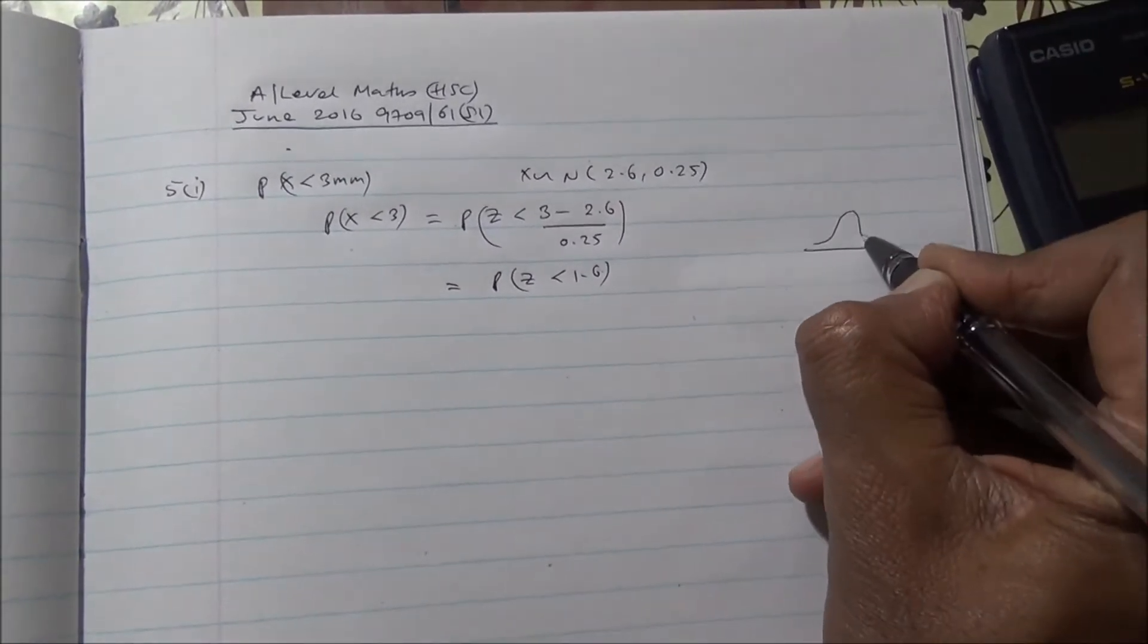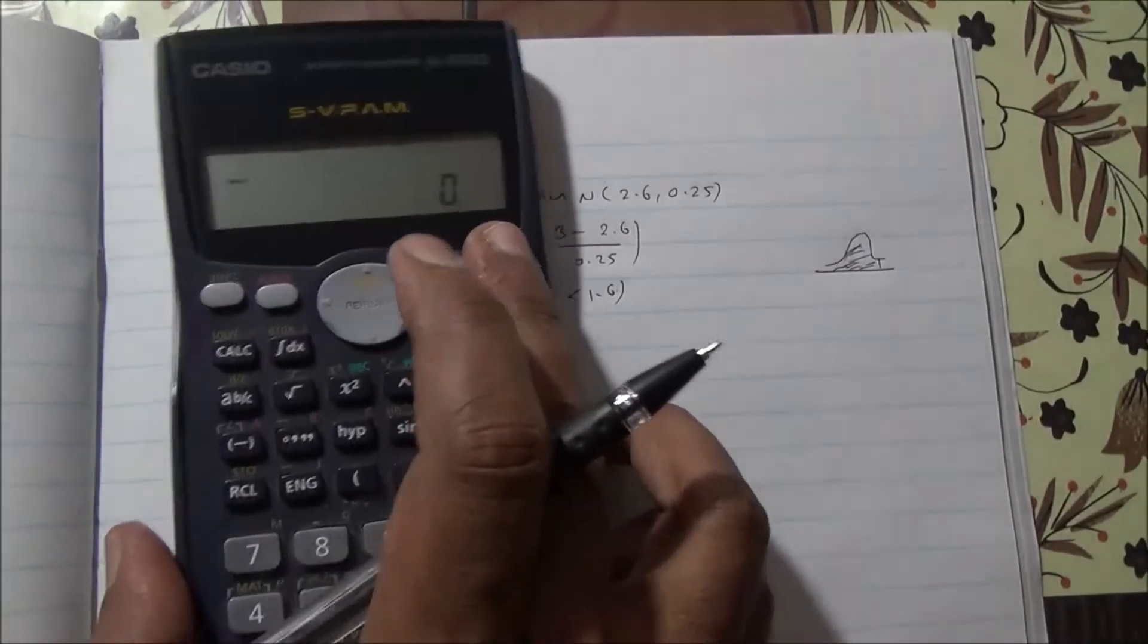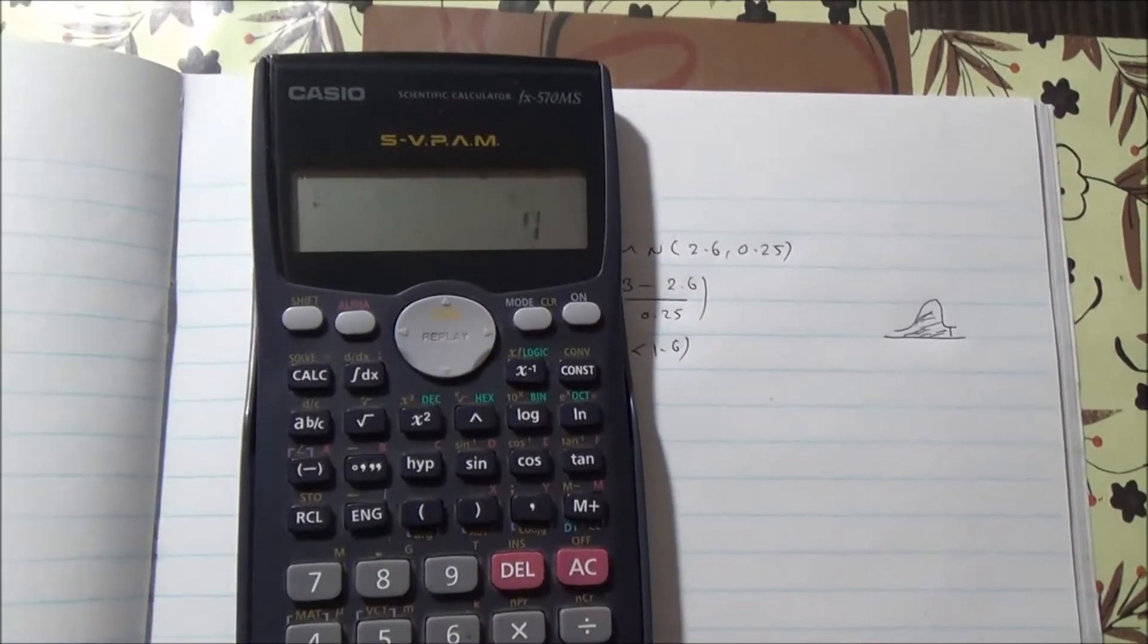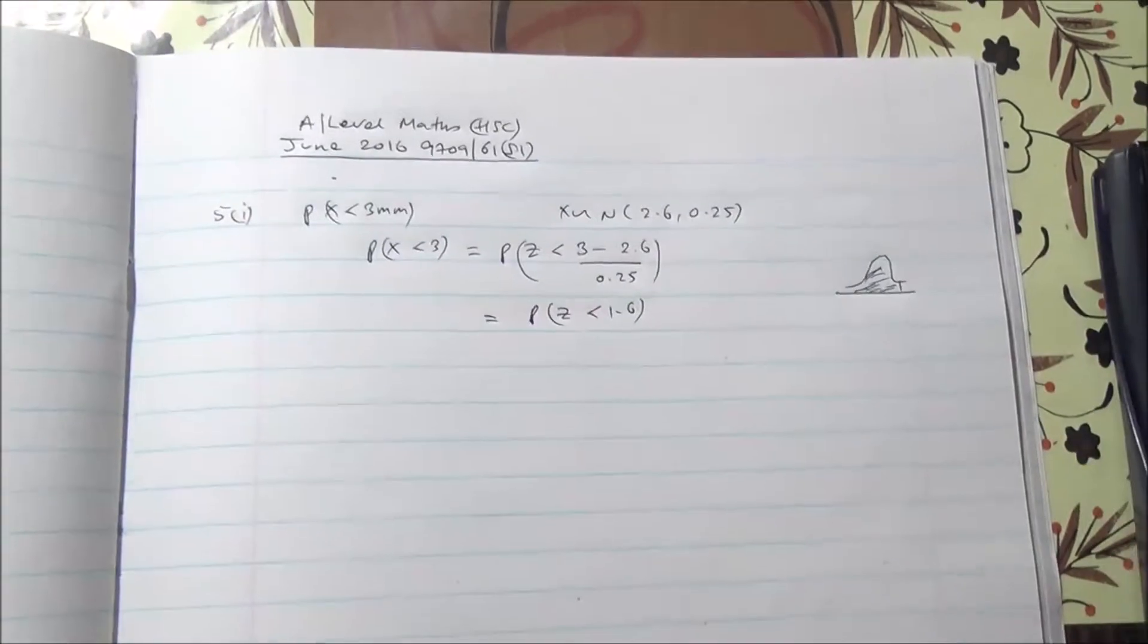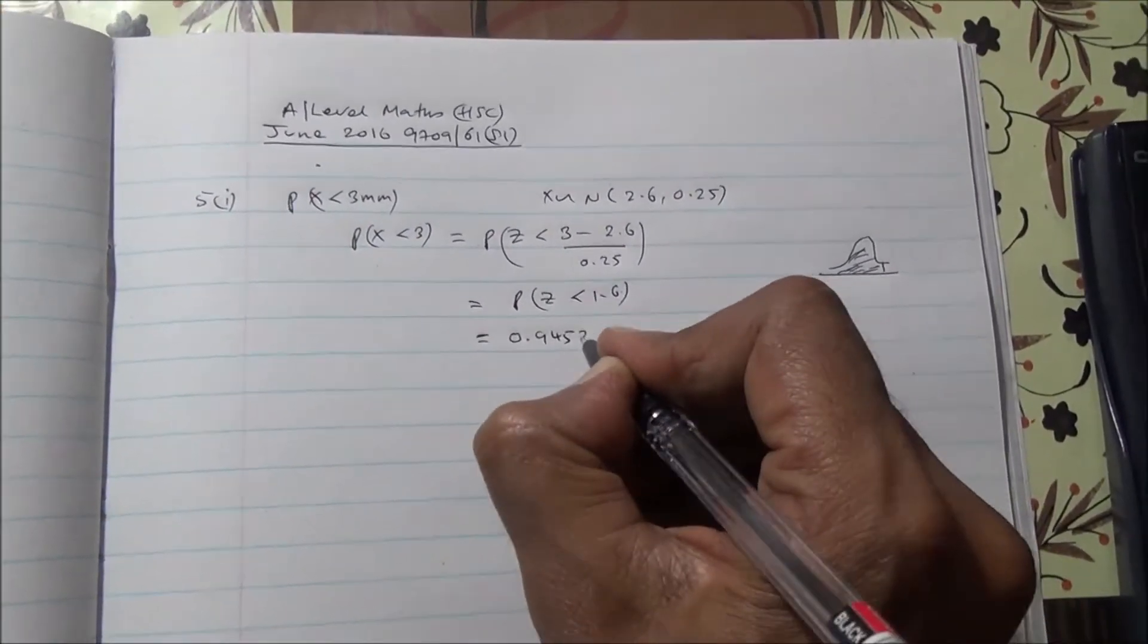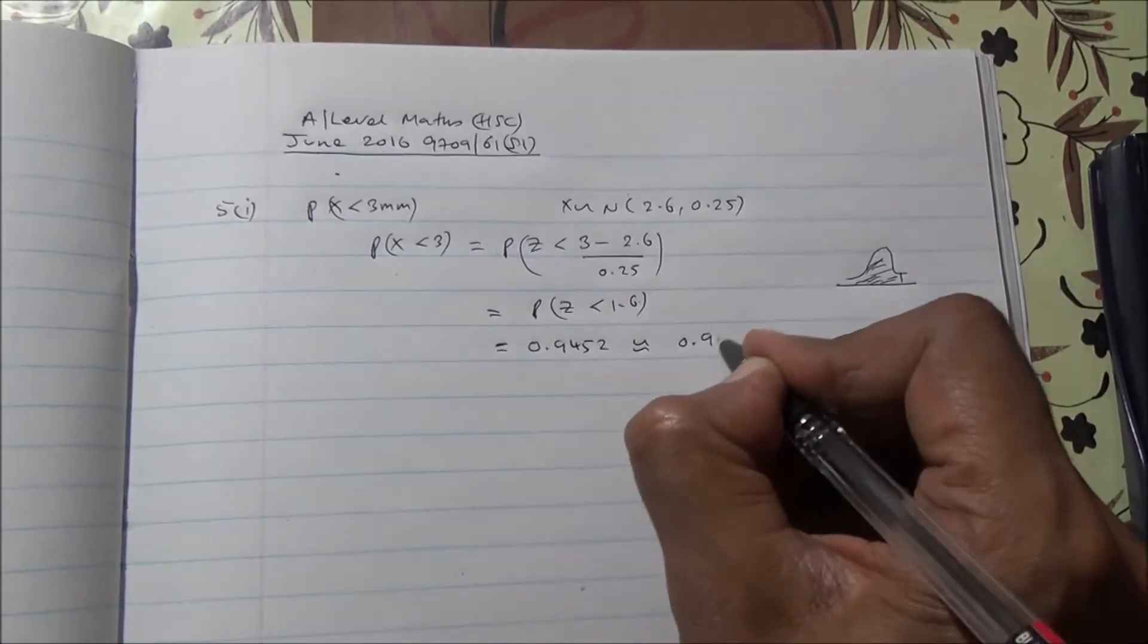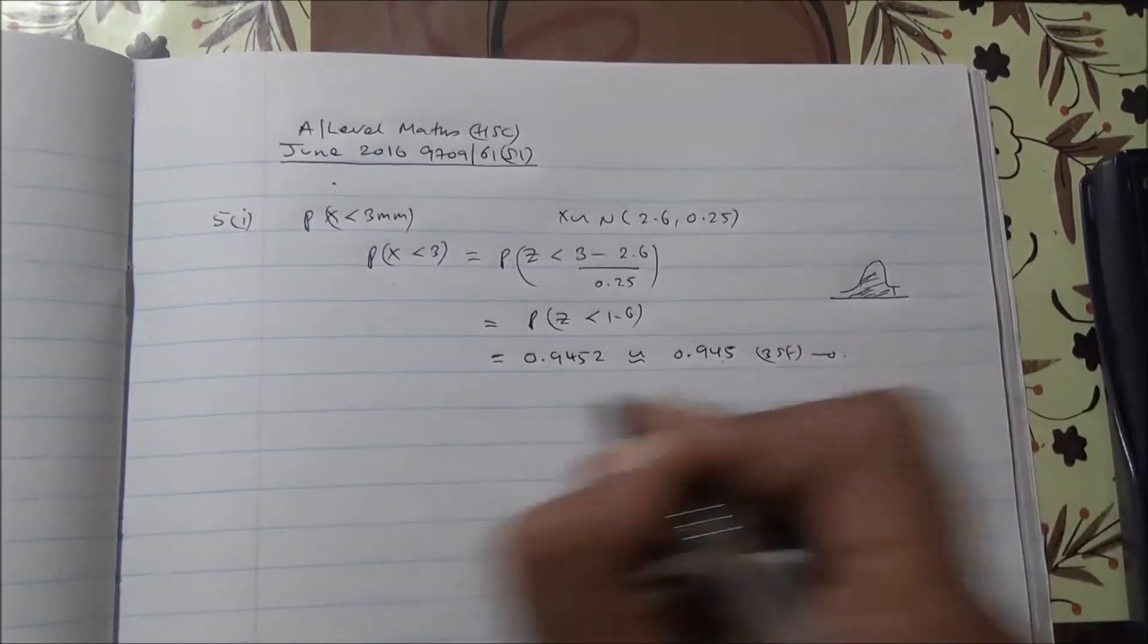We're looking at the left hand side of the graph. So for Z = 1.6, the value is 0.9452. This is 0.945 to approximately 0.945 to 3 significant figures. First part of the question is done.